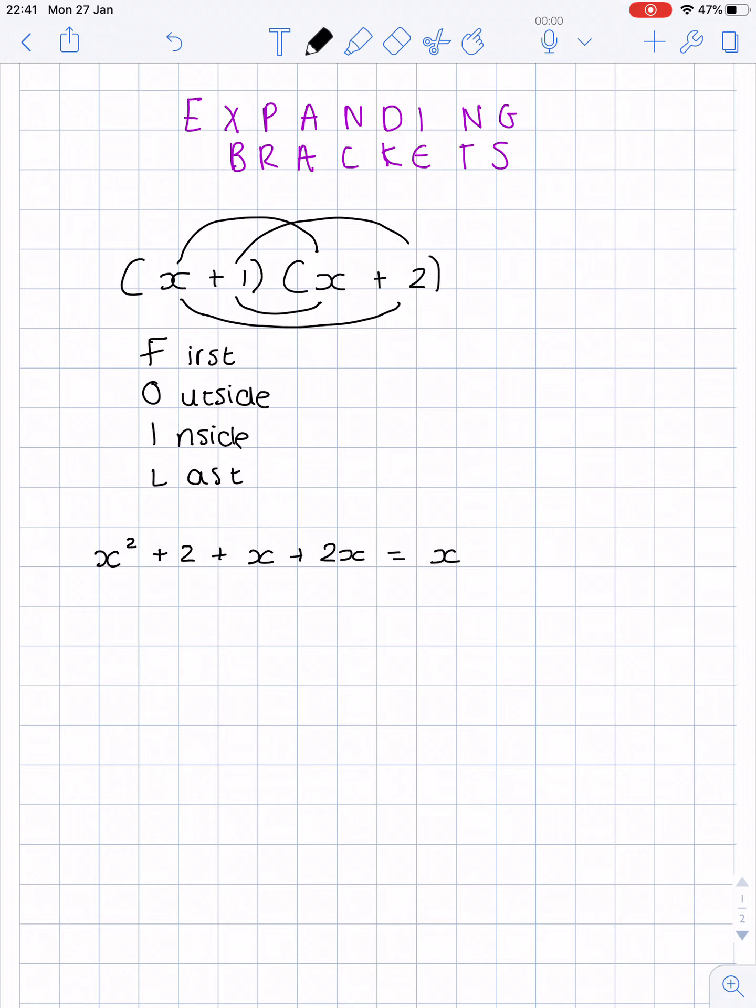So when you simplify this we get x squared, and then we add 2x to 1x. This would give us 3x, and then we're left with 2 and that would be your answer.